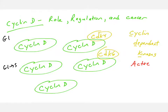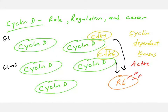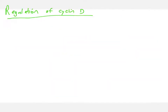So really what cyclin D is, is a cofactor that activates a kinase. What do these kinases do? The important thing is that they phosphorylate their substrate, a protein called RB or retinoblastoma. CDK4 and CDK6, when bound to cyclin D, will phosphorylate RB. Cyclin D is clearly a very important protein that regulates the transition of most human cells from the G1 phase to the S phase.